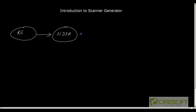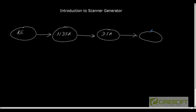From the NDFA, we convert it to the deterministic finite automata using subset construction methods. Then from a DFA, we created the equivalent C program. Now, a given high-level language can have thousands of valid tokens, and converting each of those tokens to a regular expression, then the corresponding NDFA, and then DFA is quite tedious.